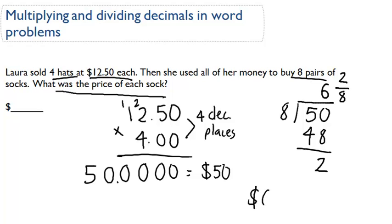I'm going to write this down here. Six and two-eighths is the same as 6.25. Your final answer, $6.25.